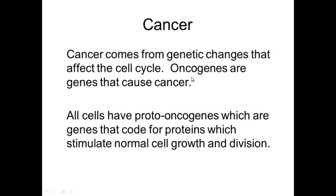Everybody in their cells, in your DNA, have proto-oncogenes. These are genes that code for proteins which stimulate normal cell growth and division. If you get a mutation in a proto-oncogene, the proto-oncogene becomes an oncogene and causes that cell to become cancerous.